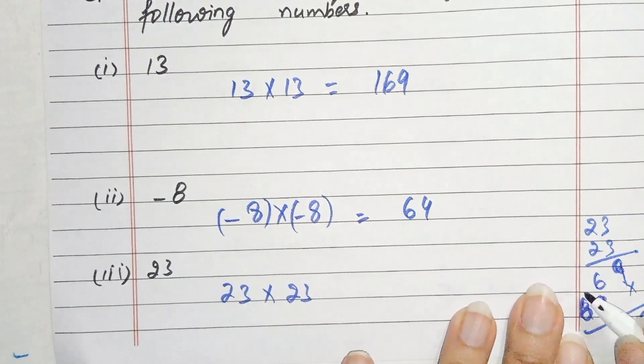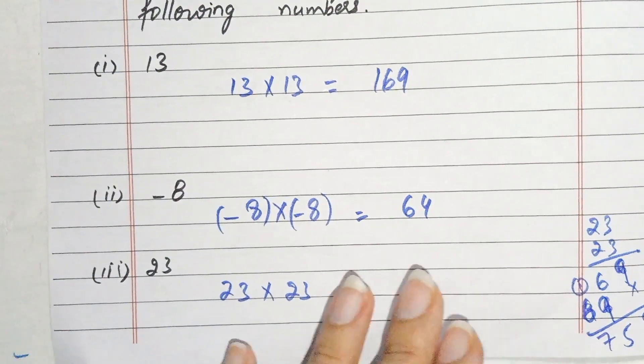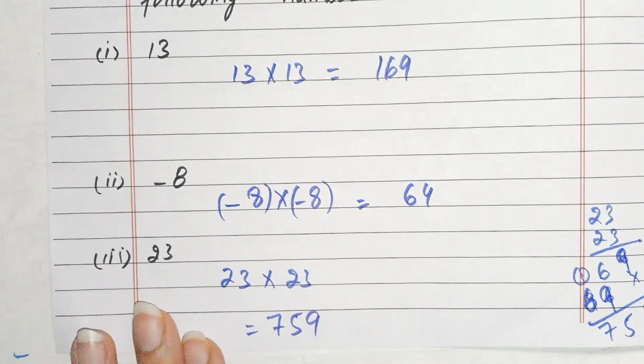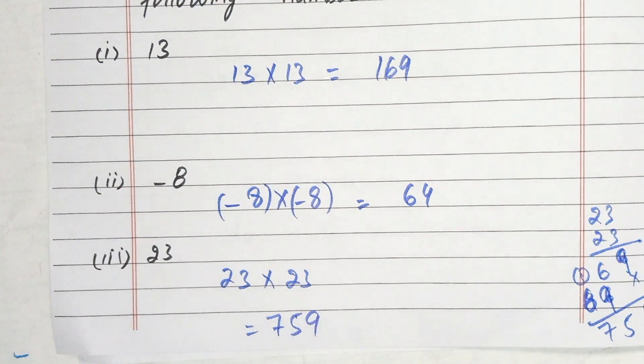Again multiplying, 9, 5, 15 and 7. And we get 529. So it's our third part.